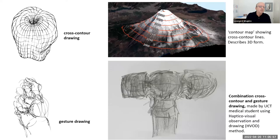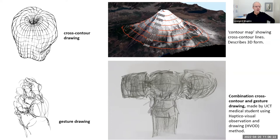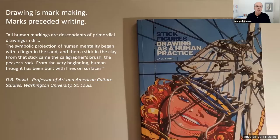Here we're looking at an image of a contour map, which has cross-contour lines that describe three-dimensional form. In drawing, we have what's called cross-contour drawing, which also makes use of these cross-contour lines. And then we have something called gesture drawing — for example, a fist drawn very quickly. In the same way that you move your hand over the object, you make marks as well. So the combination of cross-contour and gesture drawing is what we're going to use.